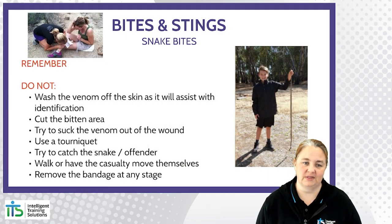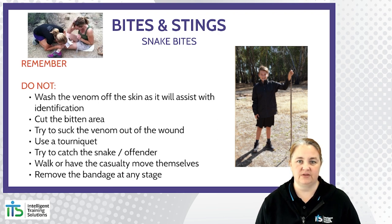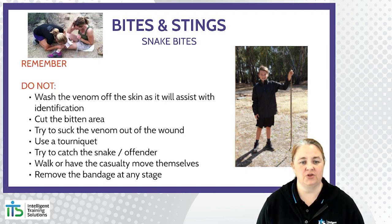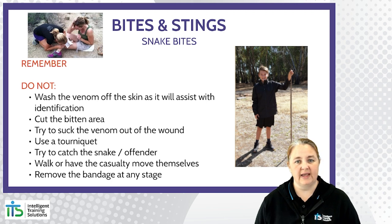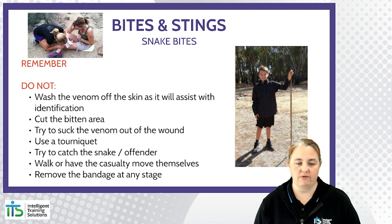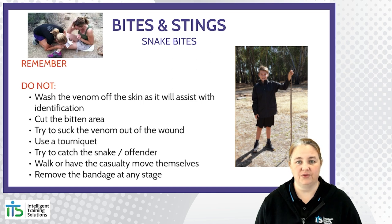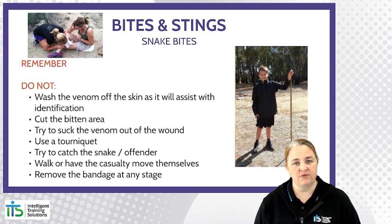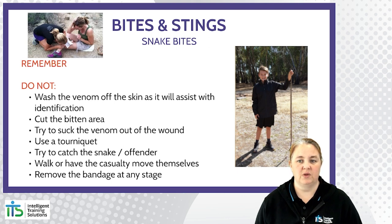The do-nots: don't wash the venom off the skin — it can be used to identify the type of snake, so if you can avoid washing it off, that's a good idea. Don't cut the bitten area and try to suck it out — it doesn't work at all and causes unnecessary trauma. Don't use a tourniquet; keeping the casualty still is sufficient to reduce venom movement. Don't try to catch the snake — it's already aggravated, and going after it will only cause further bites. Don't have the casualty walk or move unless they are in danger. And don't remove the bandage — once it's on, it needs to stay on.